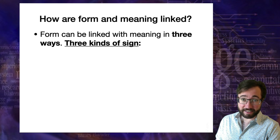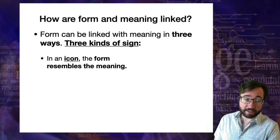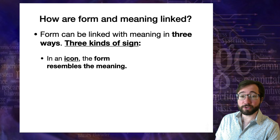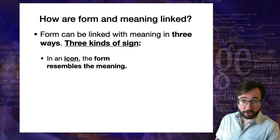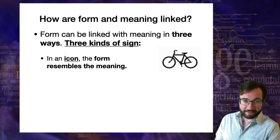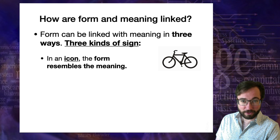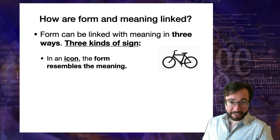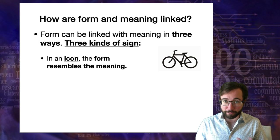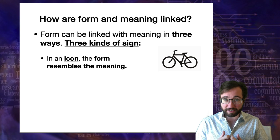The first kind of sign is what's called an icon, where the relationship between form and meaning is iconic. An icon means that the form actually physically resembles the meaning. For example, a bicycle symbol — obviously it means bicycle, and you know that even if you've never seen it before, because it looks like a bicycle. The form physically resembles the meaning, so the link between form and meaning is iconic.